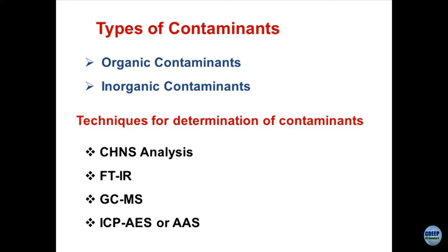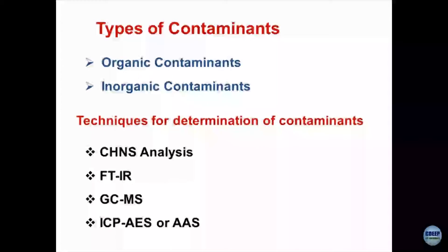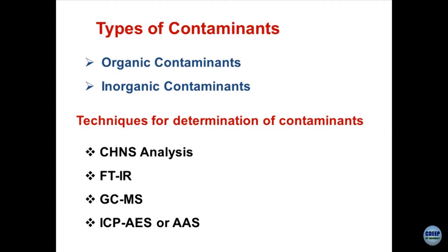We have discussed different techniques in the previous lecture. Normally a CHNS analyzer — that is Carbon, Hydrogen, Nitrogen and Sulphur analyzer — is required. This equipment helps in finding out the CHNS components of geomaterials and what type of alterations these elements are going through during contamination of soils. FTIR — Fourier Transform Infrared Spectroscopy — followed by GCMS (Gas Chromatography with Mass Spectroscopy), and ICP, AES and AAS are the tools normally used.